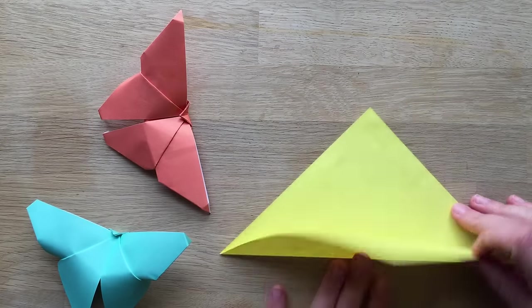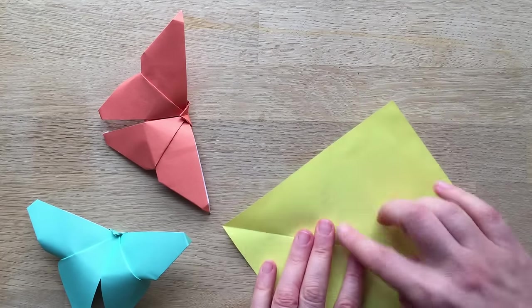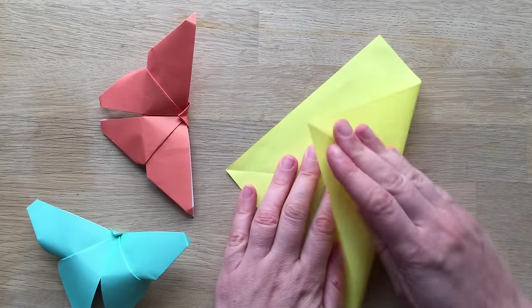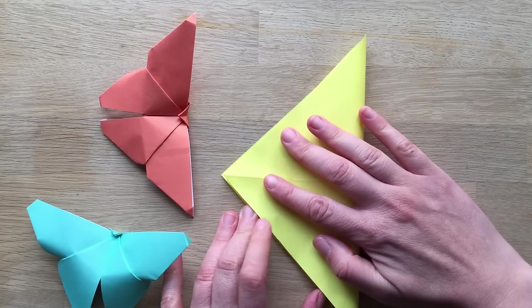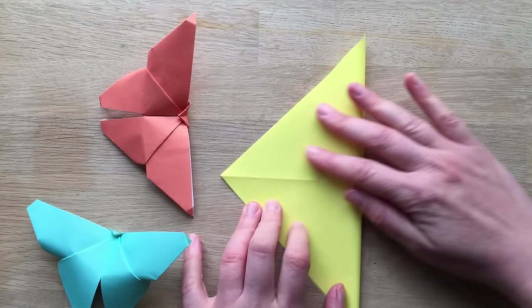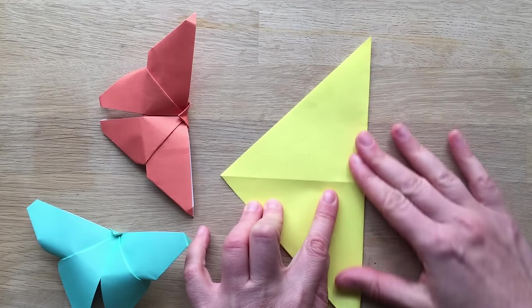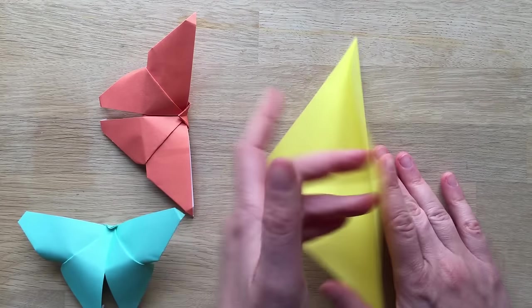So, first thing is you fold it over, point to point, creating a diagonal, open it up, fold it this way, again point to point, creating a nice neat edge here, open it up.